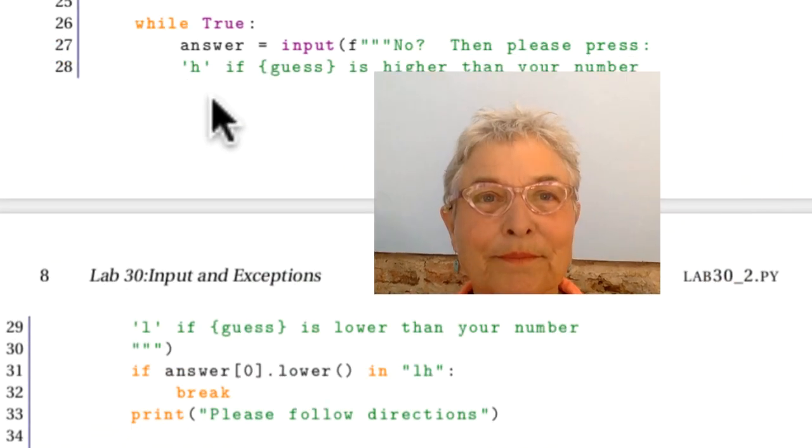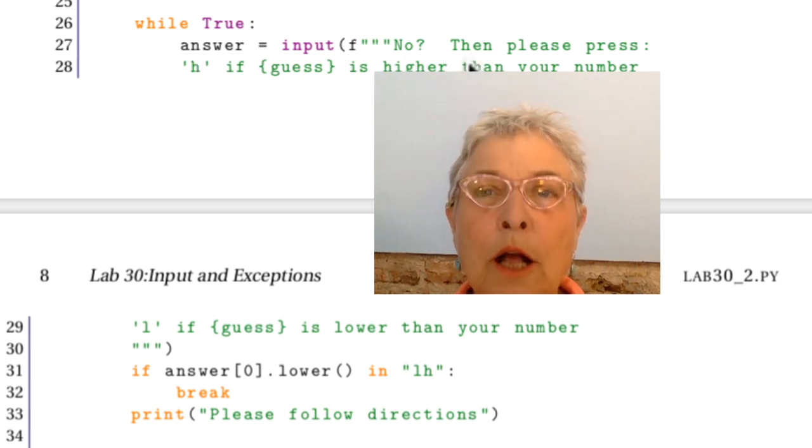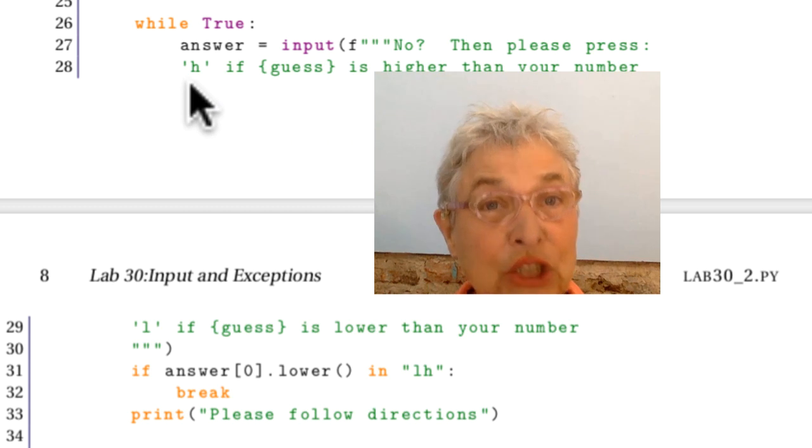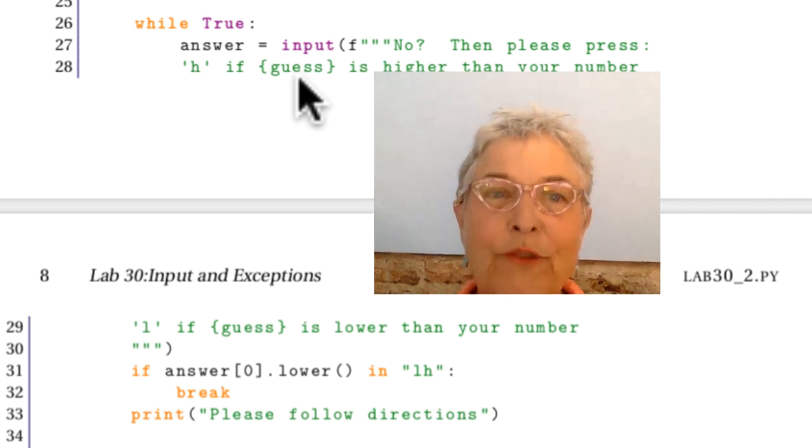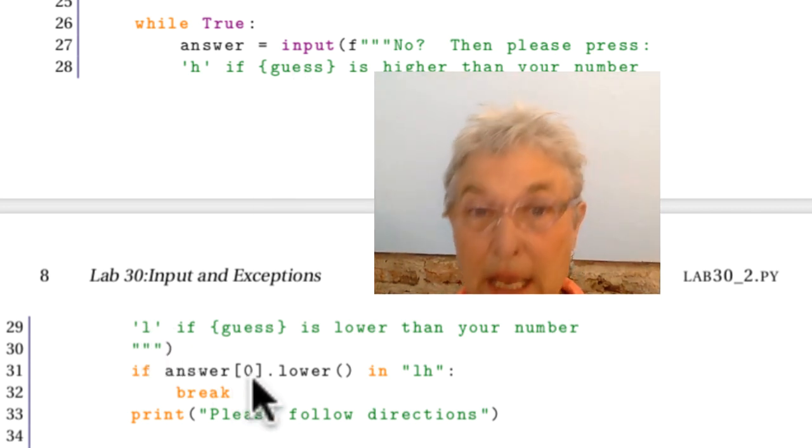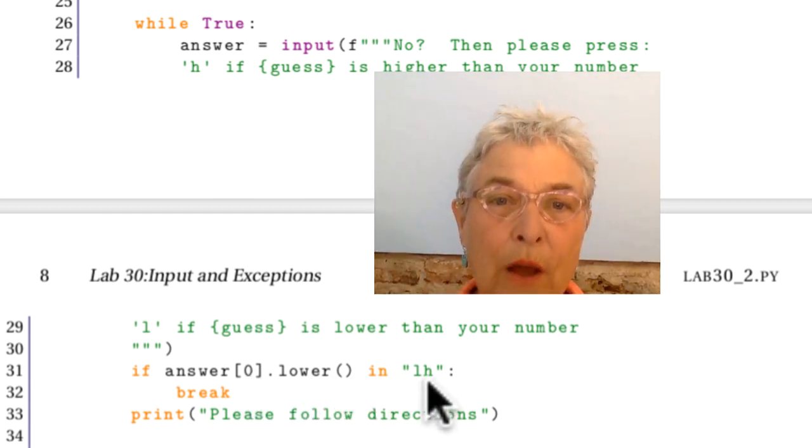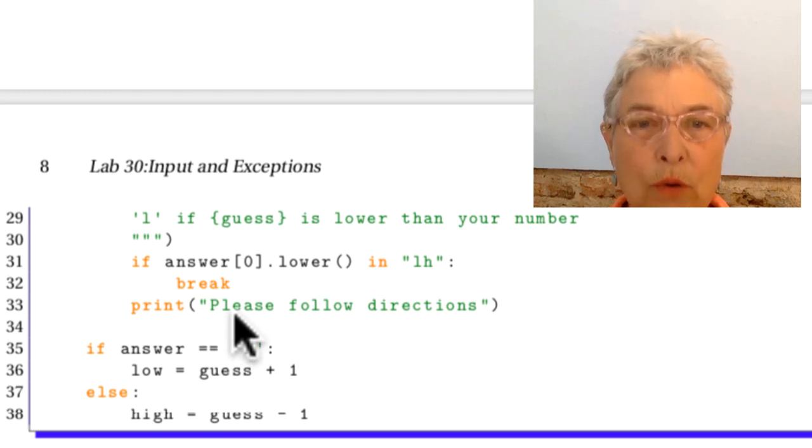But if it is not Y, once again I do a while true for forever, and I'm asking 'Then please either press H for high' - and I report the guess that we got last time, very friendly - 'or L.' I look again at the first character, the lowercase version. It better be one of those. If it is, I break. Otherwise, I scold and go around again.